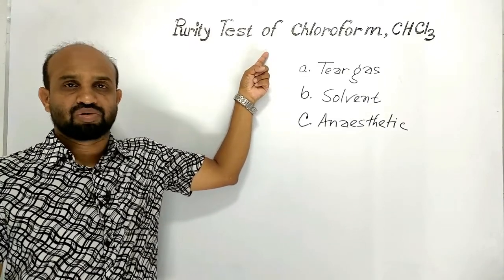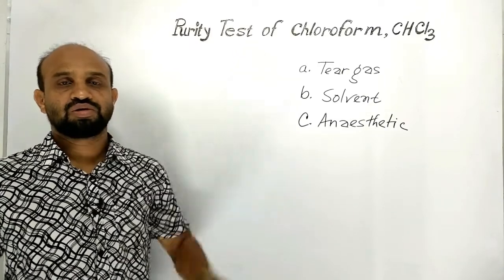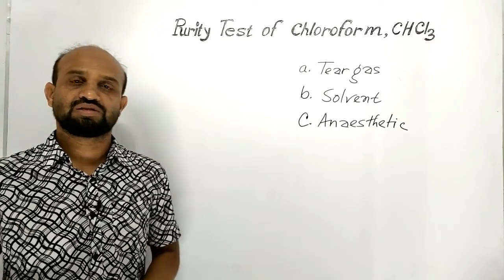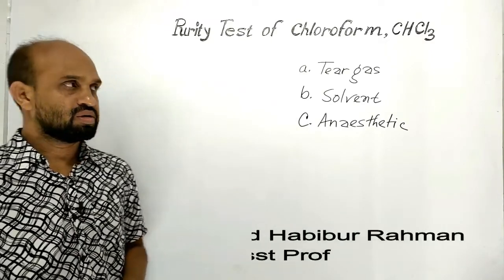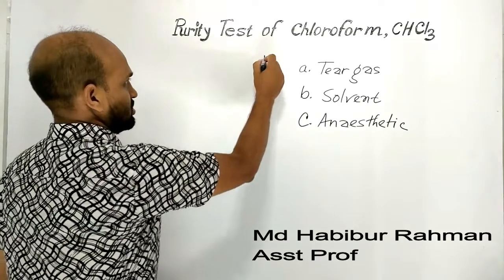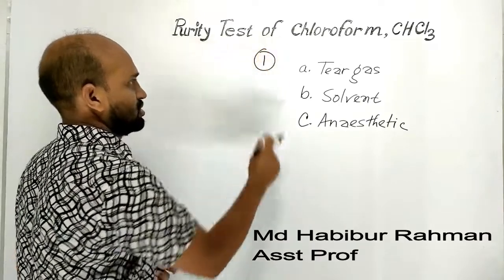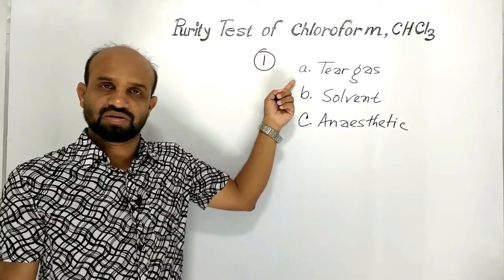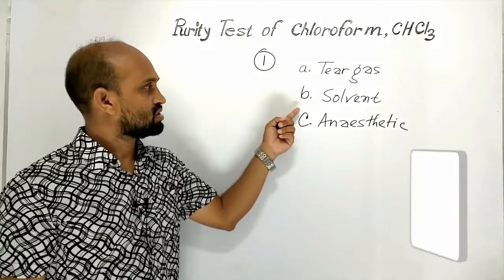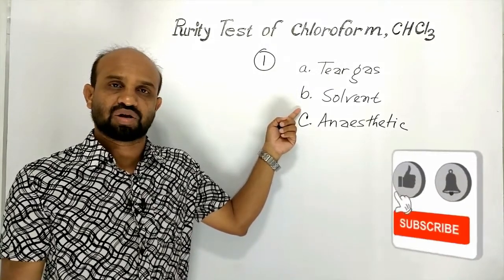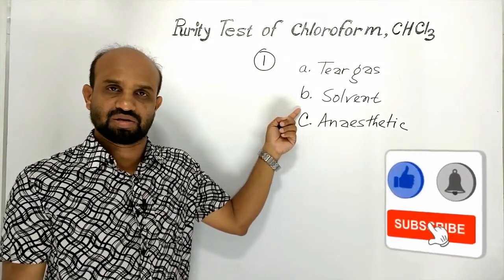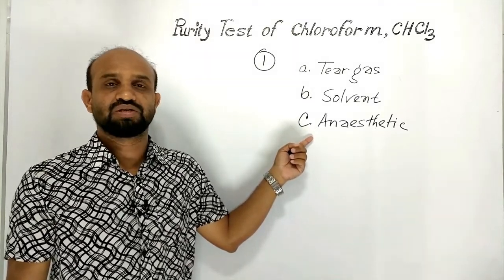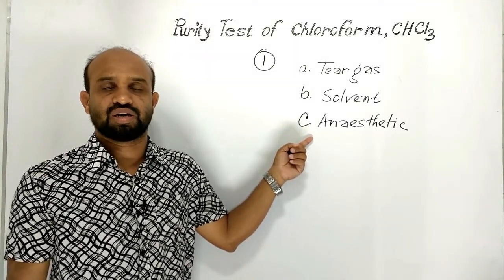Purity test of chloroform — this is today's lesson. Why is this important? Number one: chloroform is used to prepare tear gas, it is used as a solvent in industries, and chloroform is used as an anesthetic in surgery.